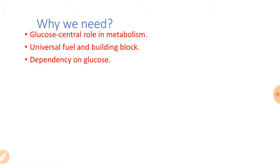We humans and other animals depend on glucose completely for metabolic energy. Glucose is the sole or major fuel source for human systems like the brain and nervous system, and also for certain cells such as RBCs (erythrocytes), and organs like testes, renal medulla, and embryonic tissues.